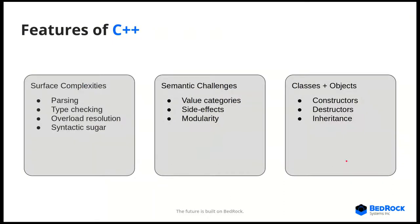I don't have time to go into all the aspects of C++ that are interesting, but I'm going to focus on three main components: surface complexities like parsing and type checking; semantic challenges like value categories and side effects, which are mostly extensions to C; and the distinguishing factor of C++ — the existence of classes and objects — and I'll talk a little bit about the way that we model those.